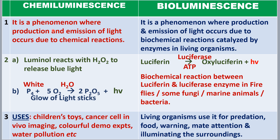What is called chemiluminescence? It is a phenomenon where production and emission of light occurs during chemical reactions. When chemical reactions occur, it is accompanied by emission of light — that is called chemiluminescence.